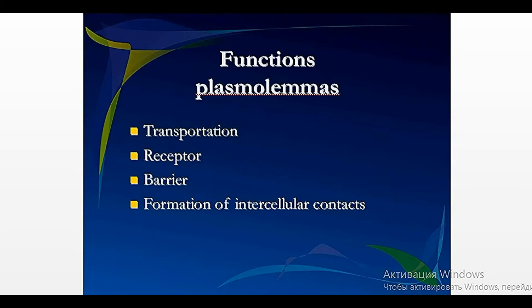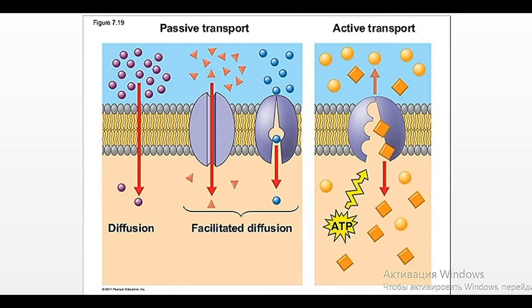Transport of substances into and from the cell. Let's start from this last function. Transport of substances can be divided into different types depending on different reasons. For example, depending on the use of energy — if the cell uses energy for transportation of different substances, such type of transport is called active transport.